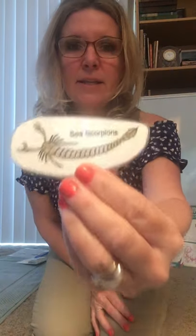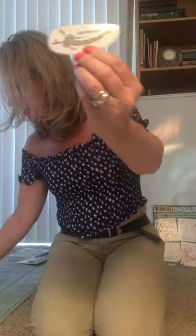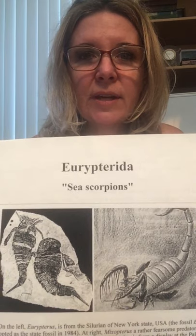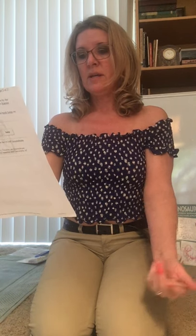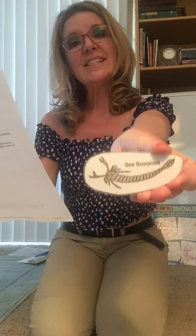A new kind of arthropod is on the earth — the sea scorpion. The proper name is eurypterids. They were among the largest and most fearsome marine predators of the Paleozoic. The smallest were just 10 centimeters, but some were as long as six feet.